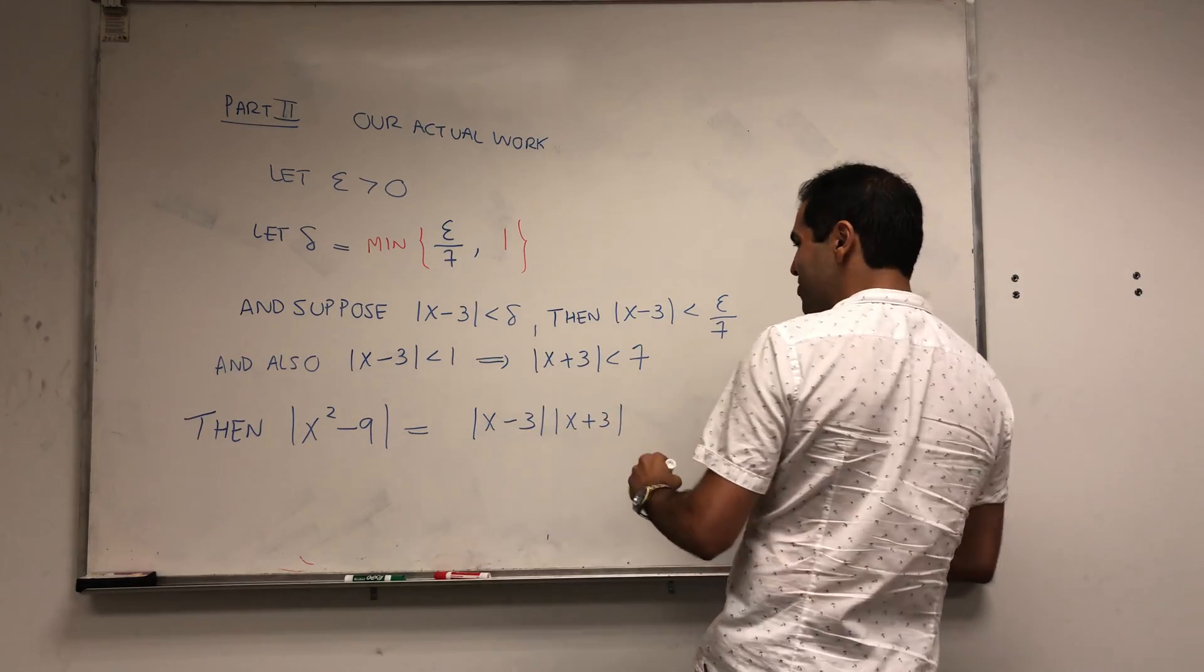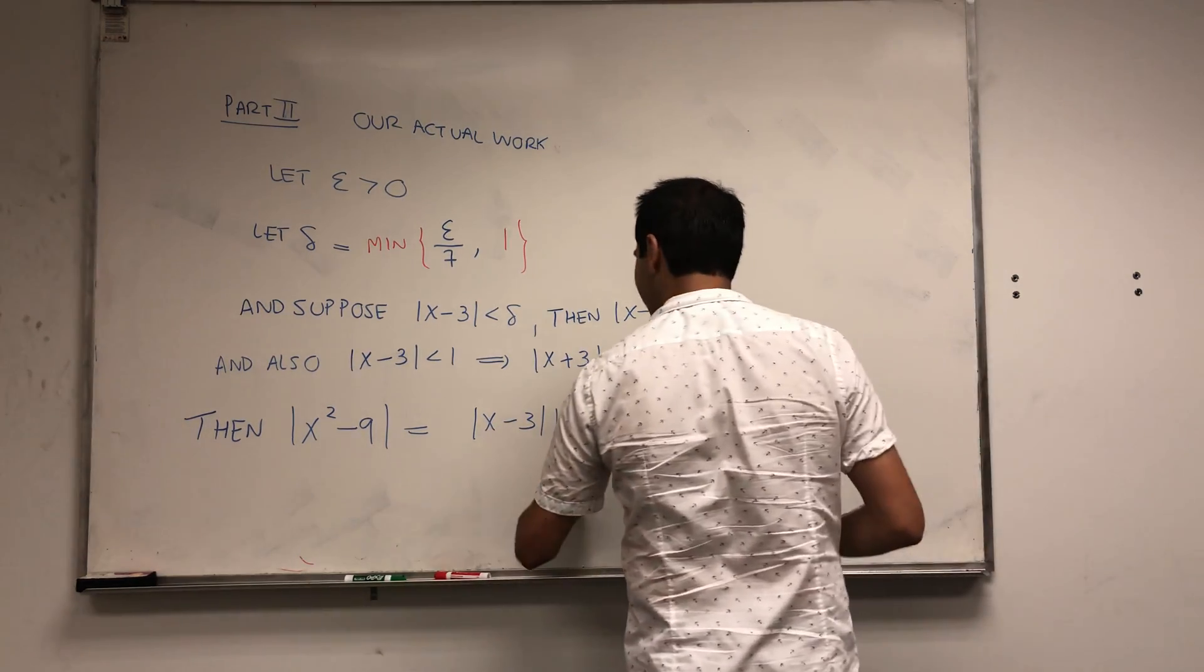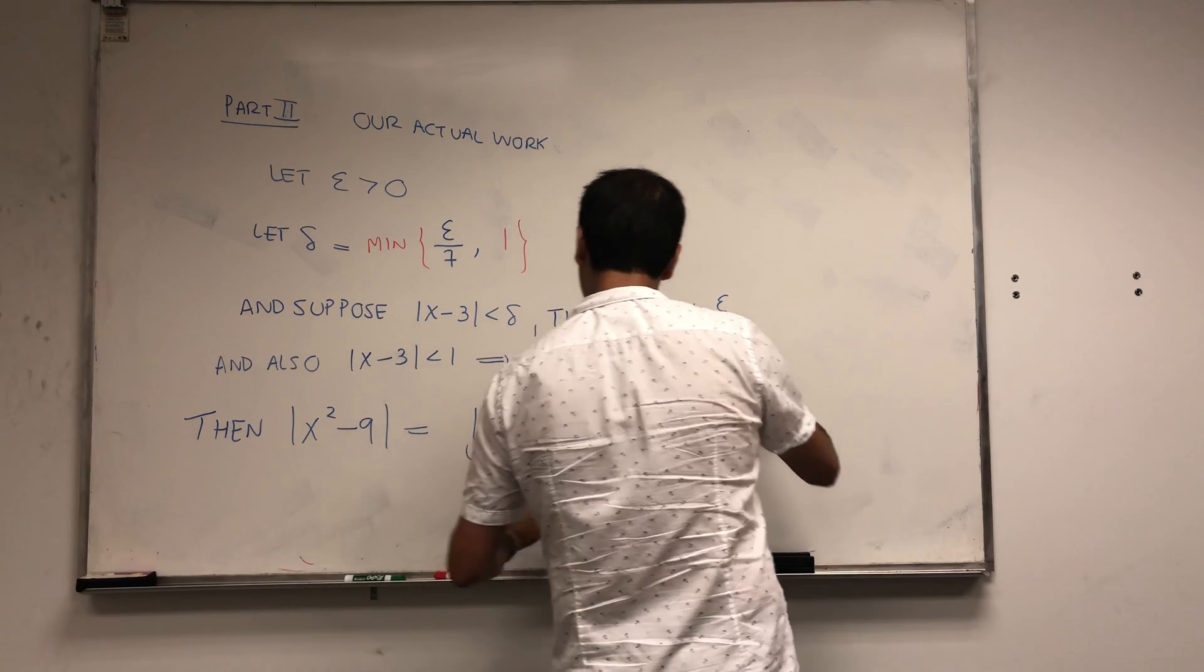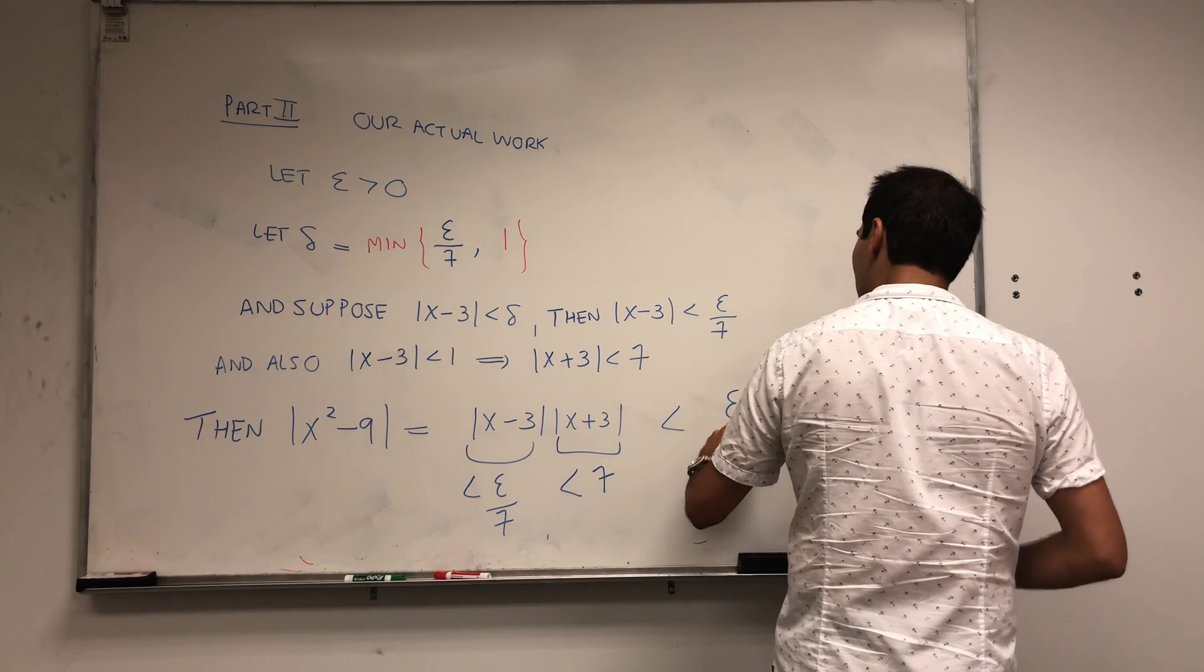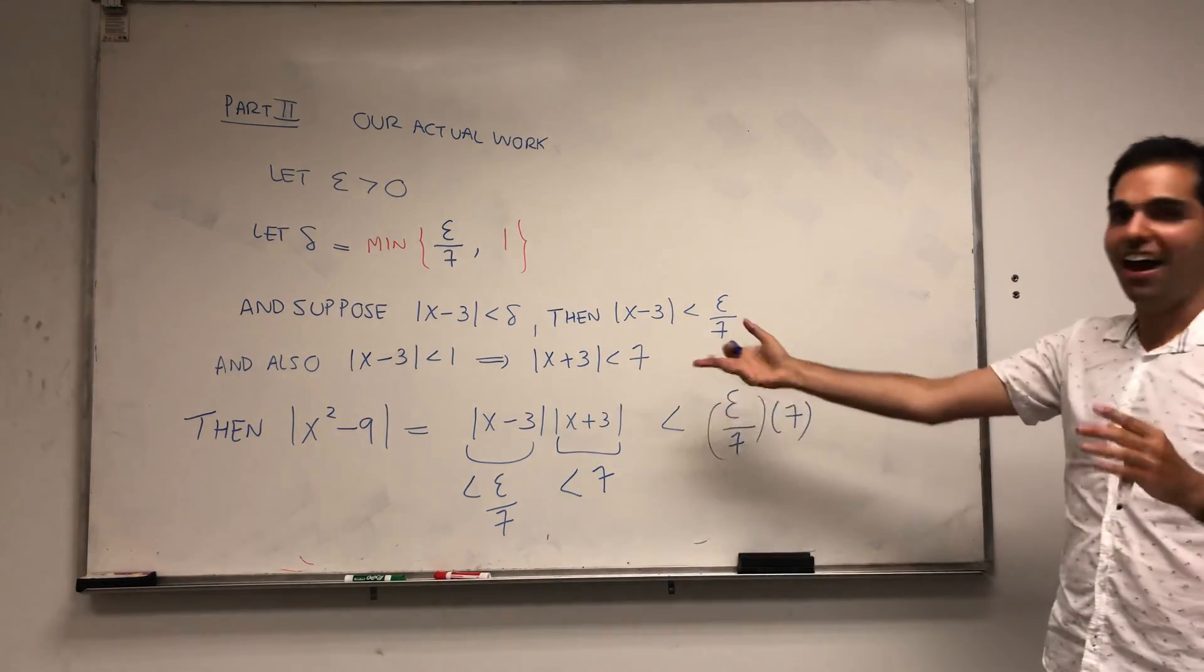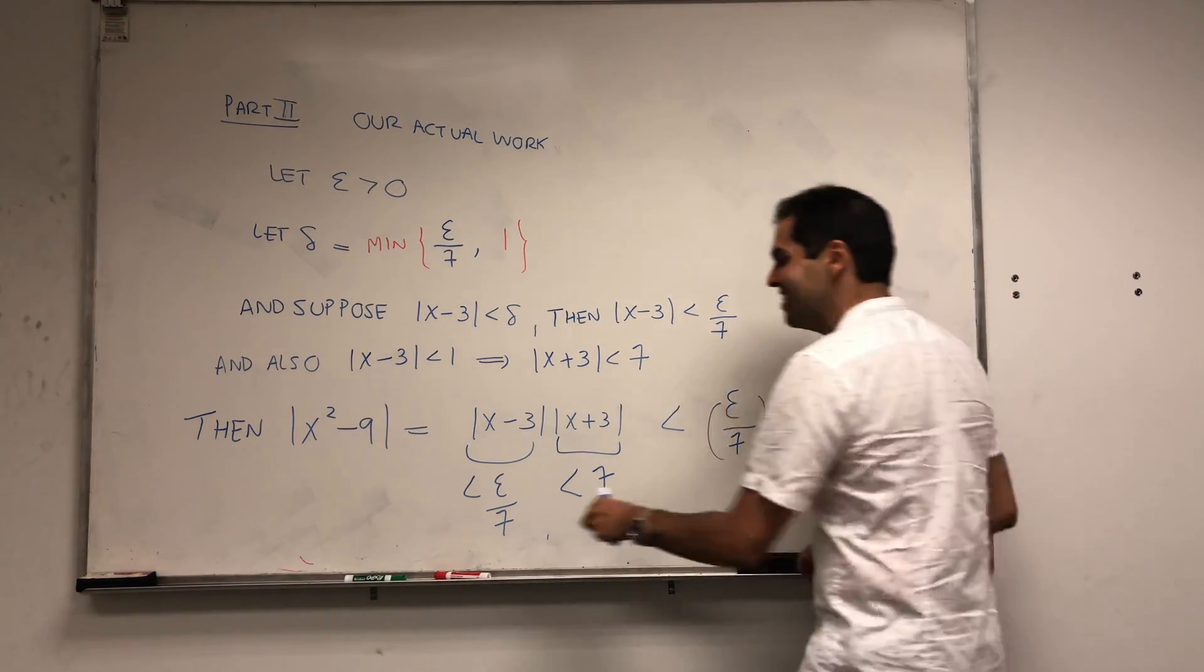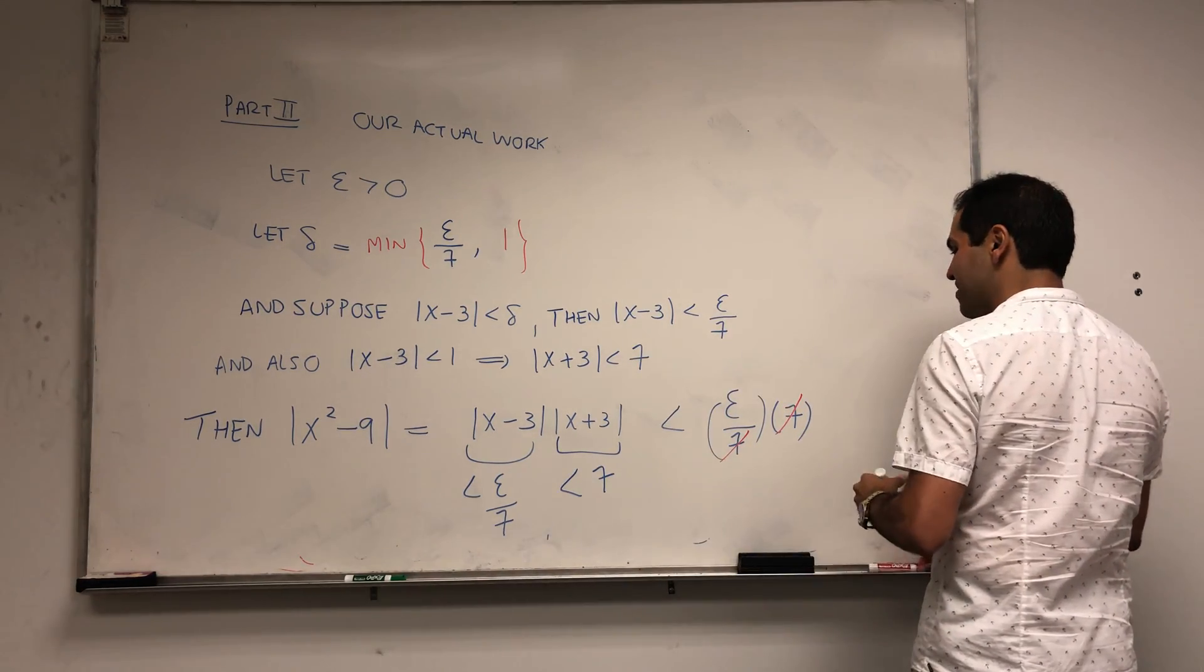Now look, here's the beautiful thing. From this part we know this is less than 7. From this part we know this is less than epsilon over 7. So this whole thing is less than epsilon over 7 times 7. Here comes the satisfying part of the proof. The 7's cancel out and you get epsilon.